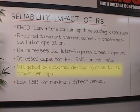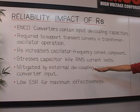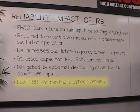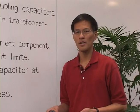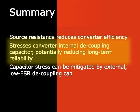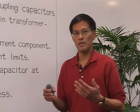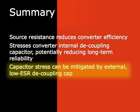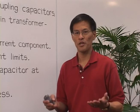You can mitigate this stress by putting an external decoupling capacitor at the converter input pins. Ideally you would put in a very low ESR, or equivalent series resistance, capacitor to maximize the effectiveness. In summary: source resistance reduces converter efficiency, it stresses the converter internal decoupling capacitor potentially reducing long-term reliability, but the designer can mitigate the impact by placing external low ESR capacitors right at the input pin. Thank you very much.